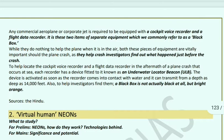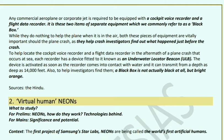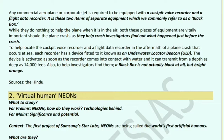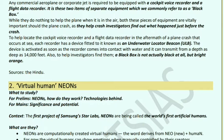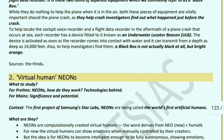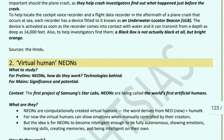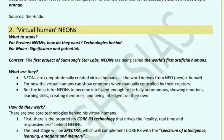The black box has nothing to do with the plane while it's in the air, but both pieces of equipment are extremely important after a crash — they help investigators understand what happened just before the crash. To help locate the CVR or FDR when a crash occurs at sea, each recorder has a fitted underwater locator beacon (ULB) that activates as soon as the recorder contacts water and can transmit from a depth as deep as 14,000 feet. Importantly, the black box is not actually black — it is bright orange.